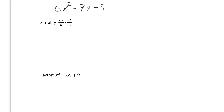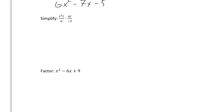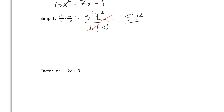Another thing that's important to do in calculus is to simplify. So you might be given something like s squared t over u times ut over negative 2, and we need to simplify it. You can multiply the tops and multiply the bottoms of the fraction. So we get s squared t squared times u over u times negative 2. We can cancel those u's to get s squared t squared over negative 2. It's customary to put that negative out in front.